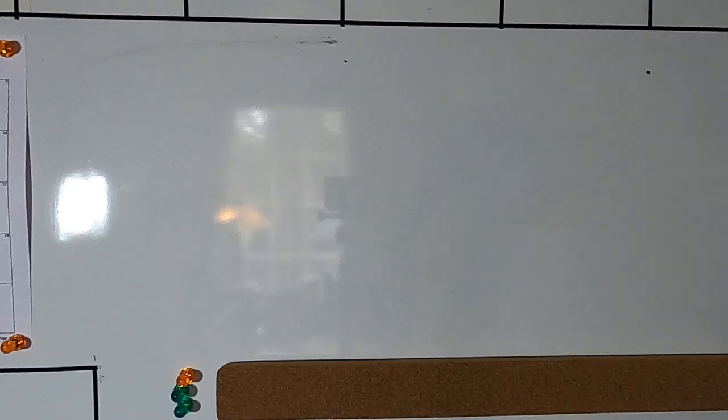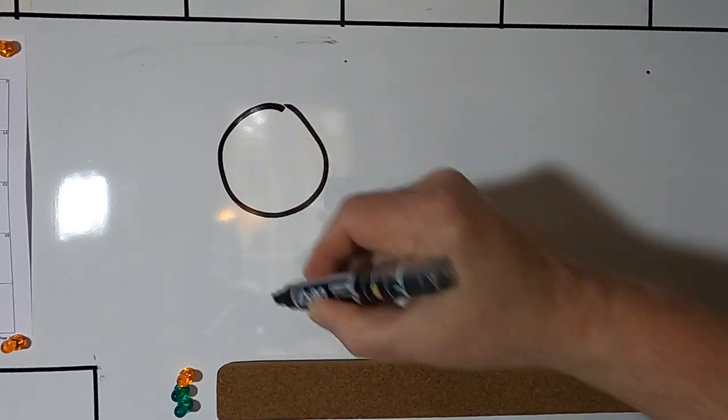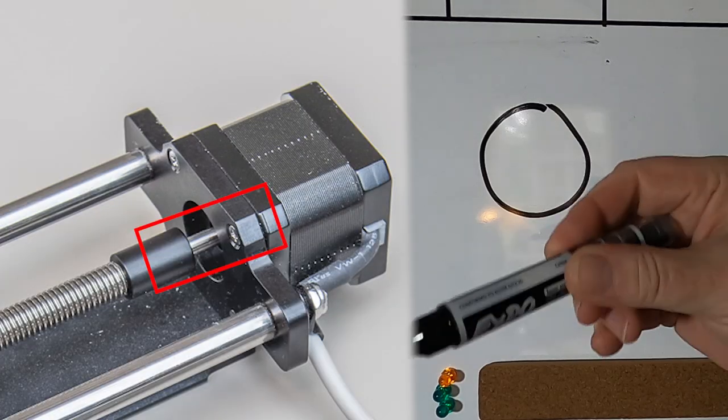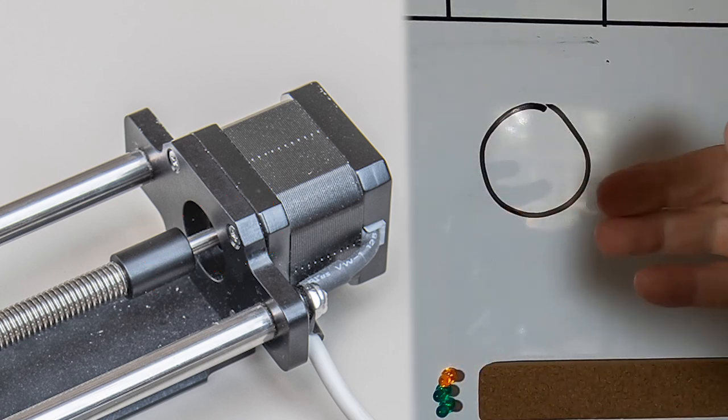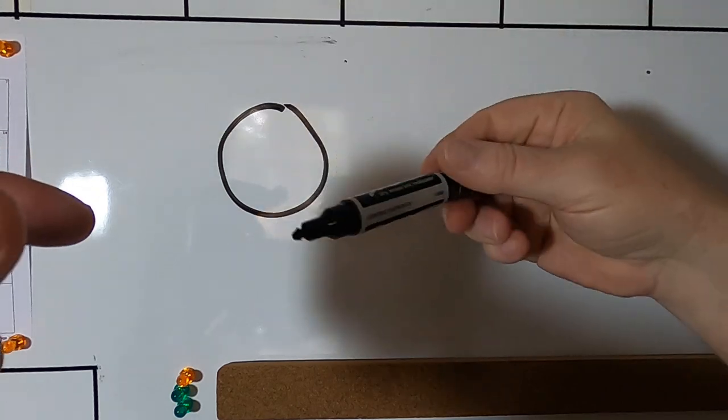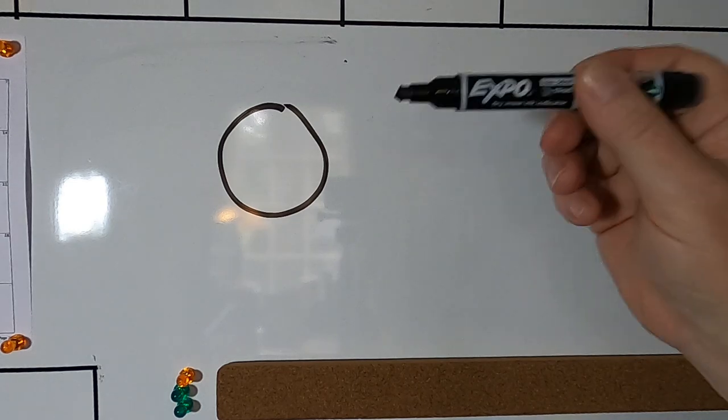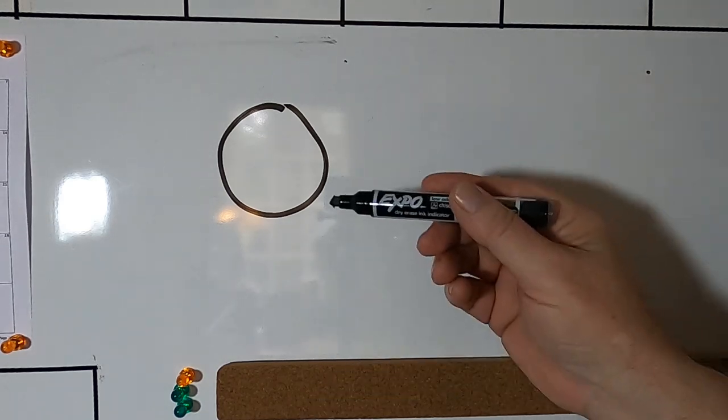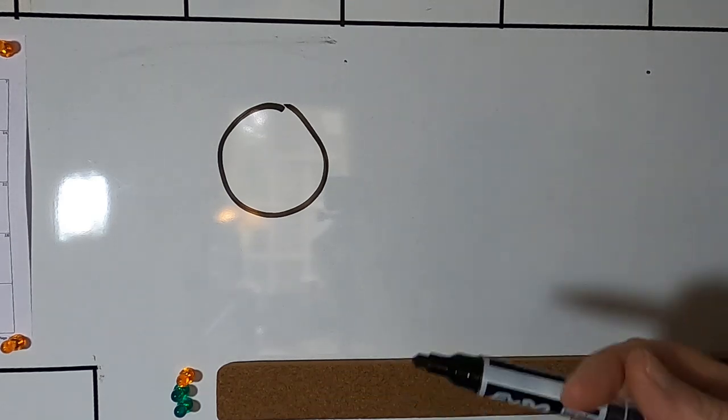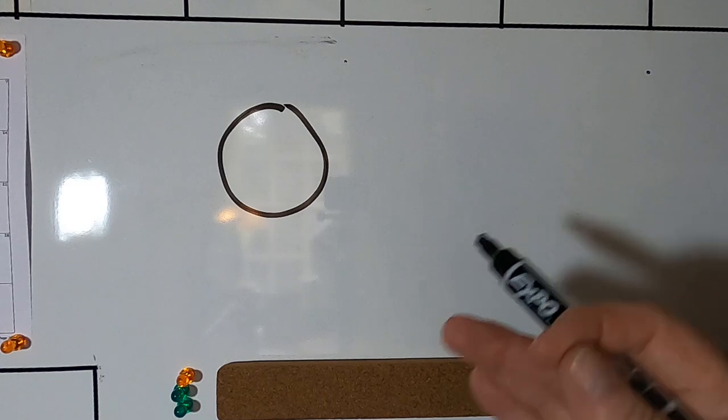So to understand backlash compensation, you really need to understand what backlash is. If this is the shaft of a stepper motor that's connected to a lead screw that comes out this way and has a carriage sitting on it, this carriage as the lead screw turns will move forwards or backwards. Now, it doesn't do that immediately because there has to be some laxity built into the system to prevent it from seizing up. You can't have just metal on metal. There has to be little gaps to allow the metal to slide over itself.